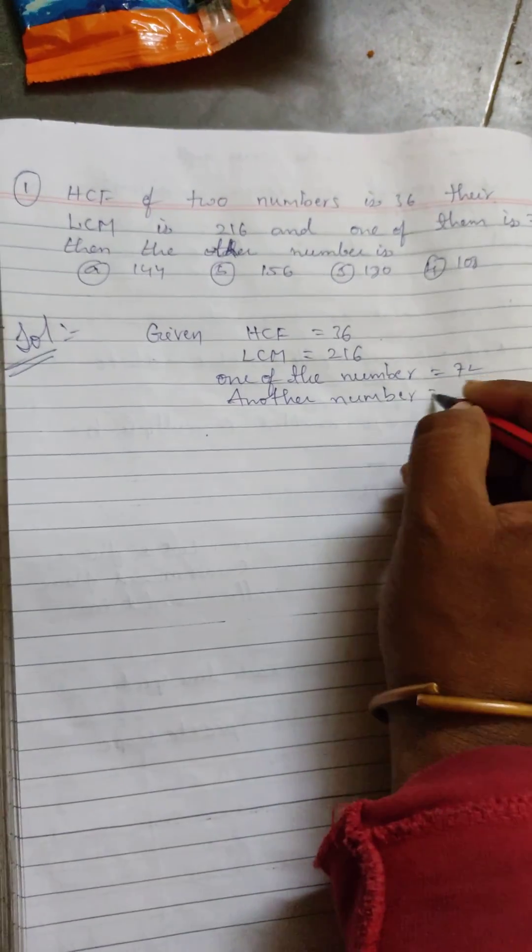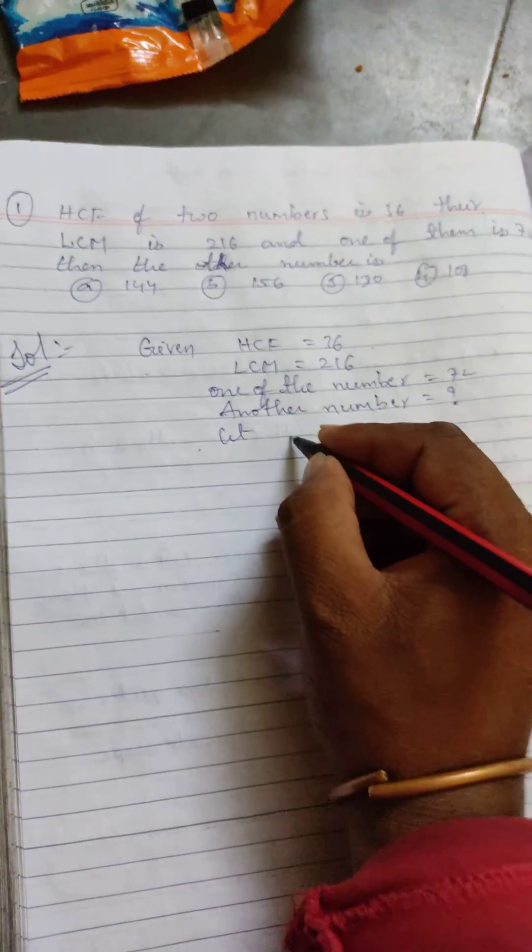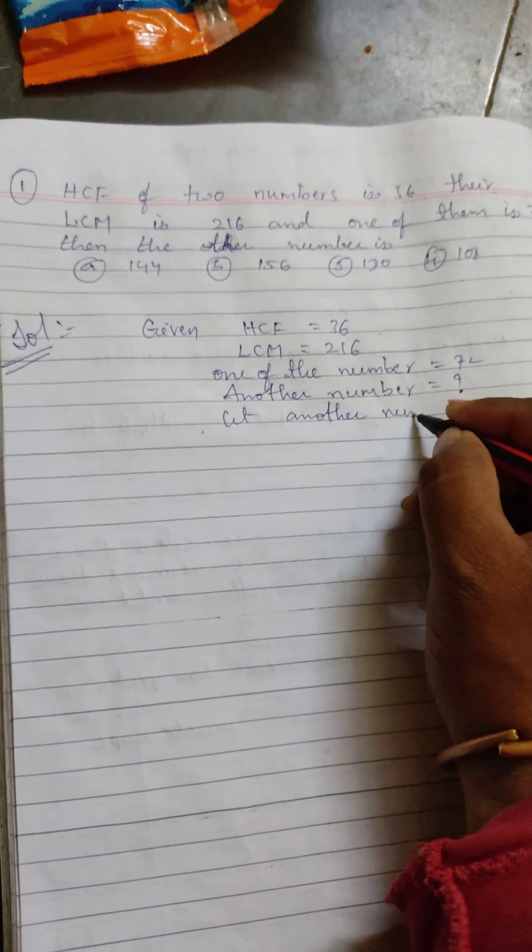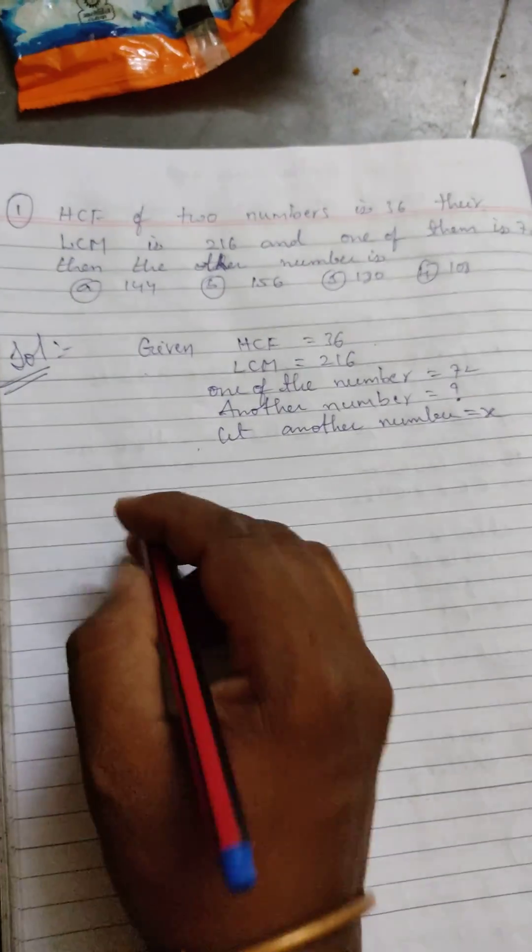Another number you don't know, find out. Okay, let another number take as x. Okay, one formula is there. What is it for finding this another number?